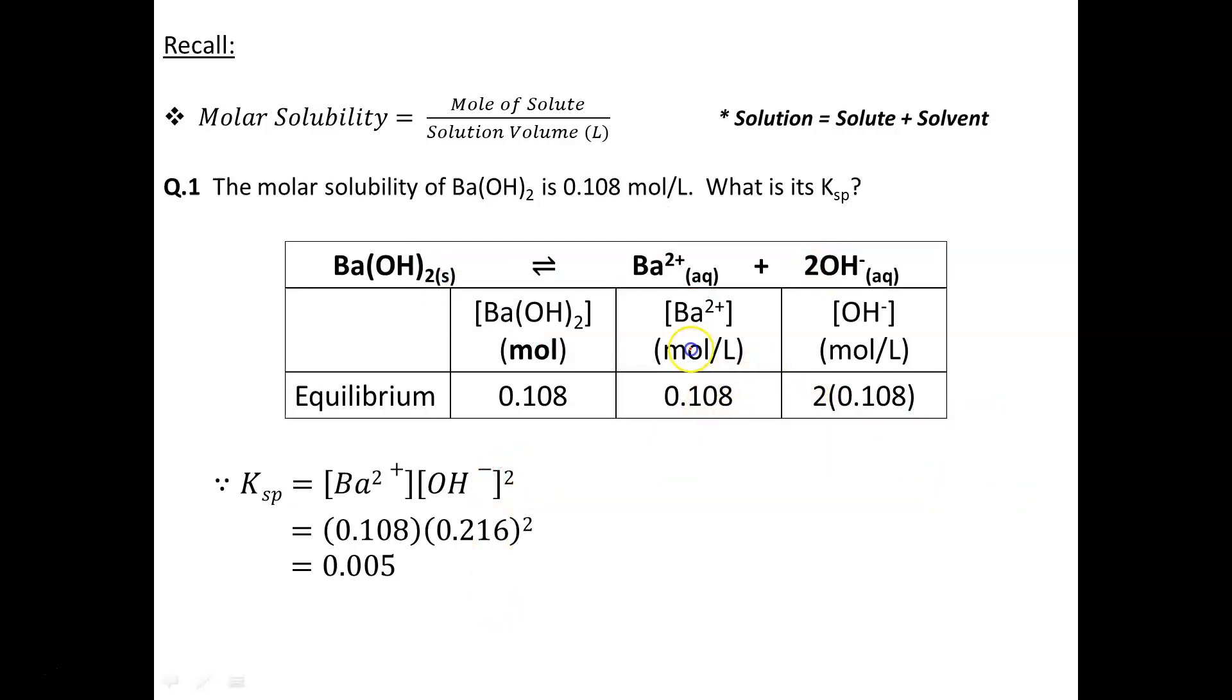From there, it's just a matter of substituting in your values and solving for Ksp. With a Ksp value of 0.005, that tells me the denominator is larger. There's more undissolved barium hydroxide than dissolved, telling me that barium hydroxide has a low solubility.